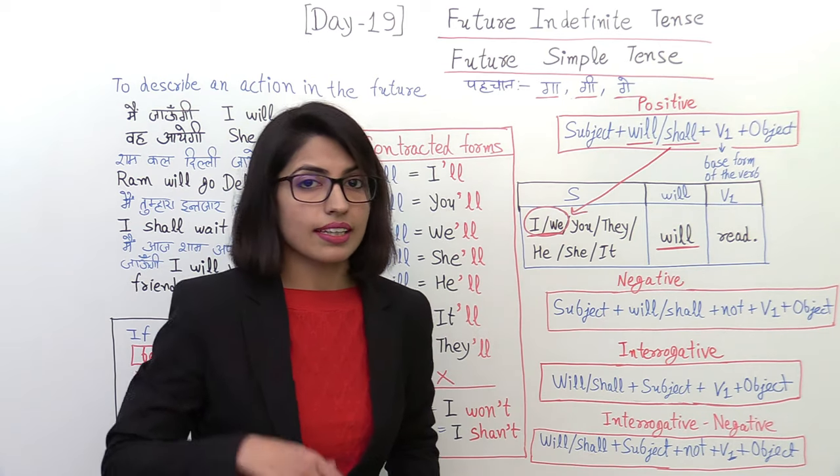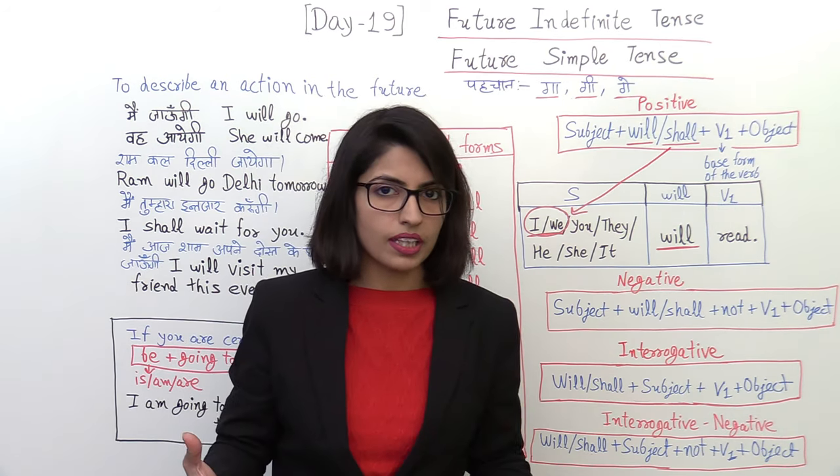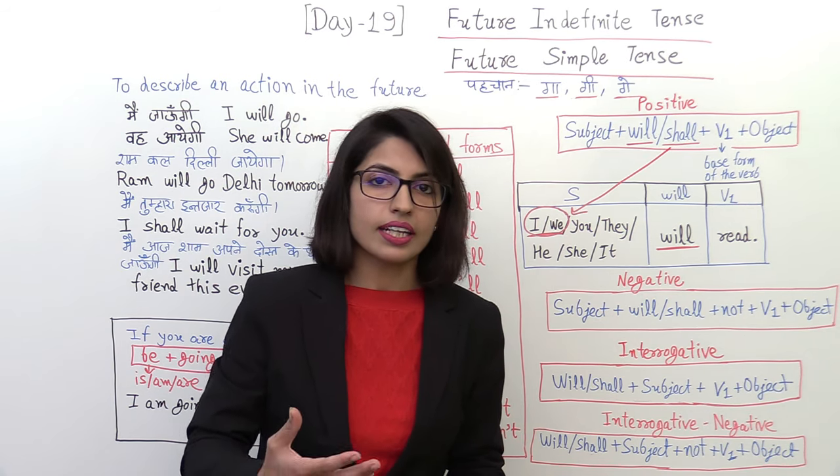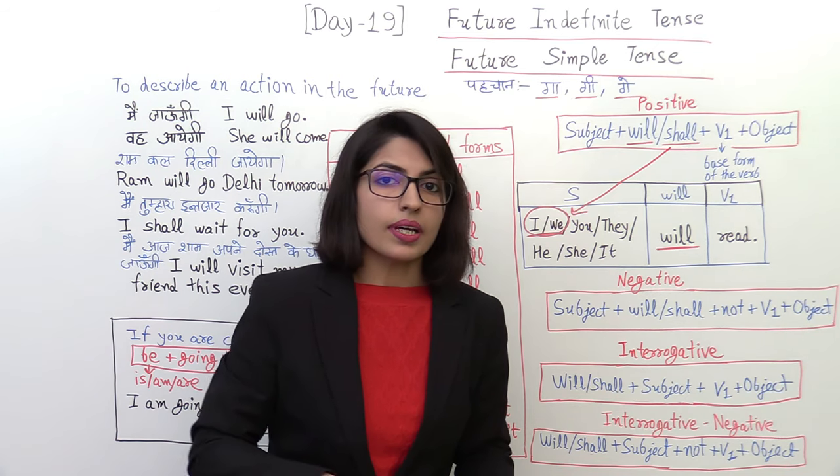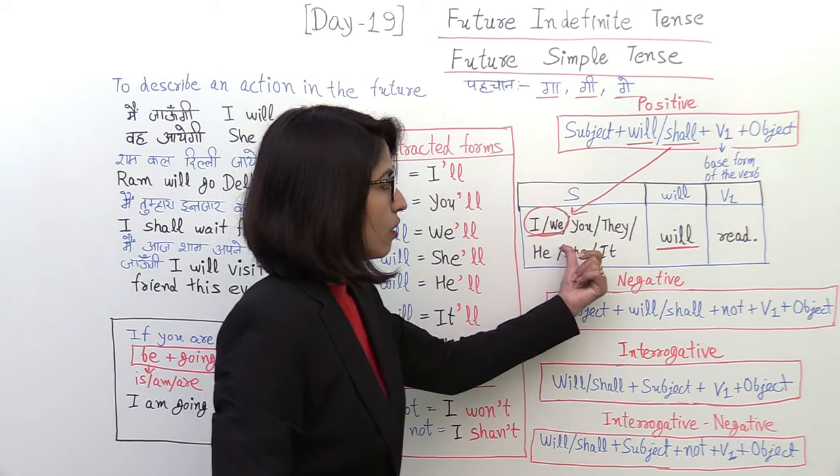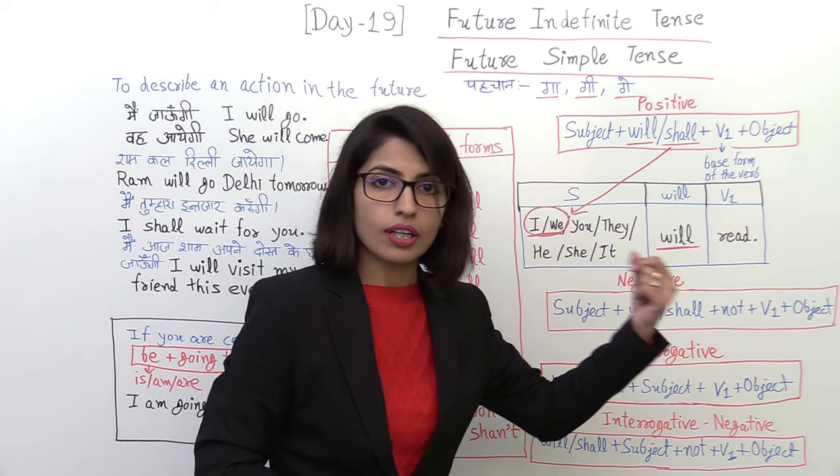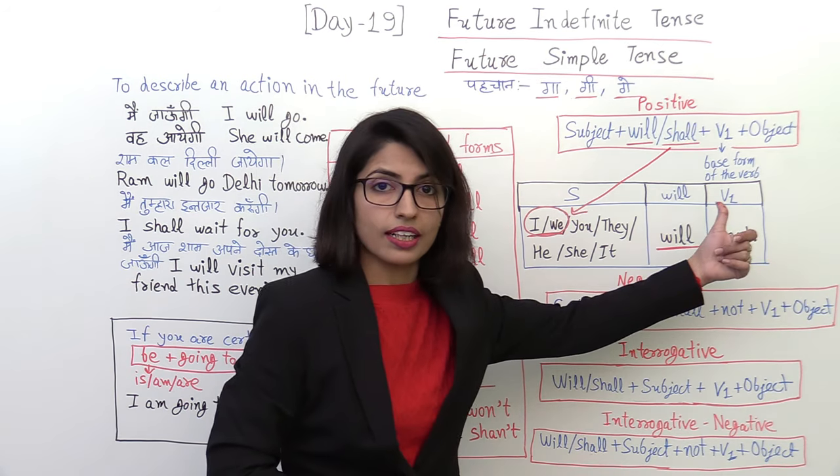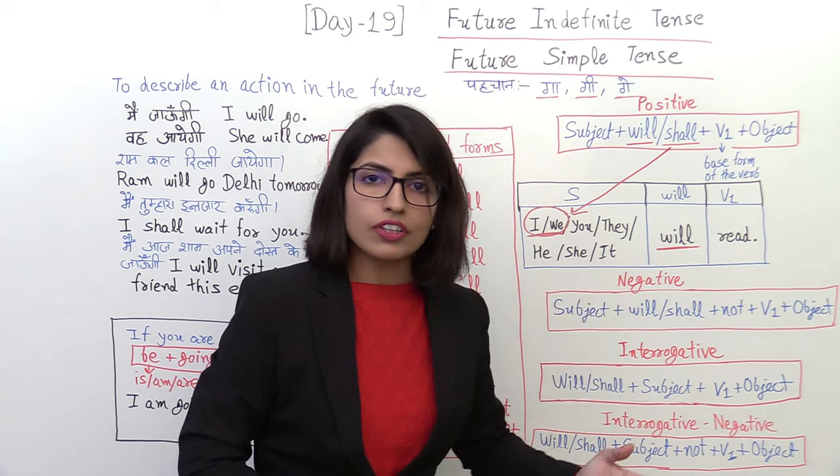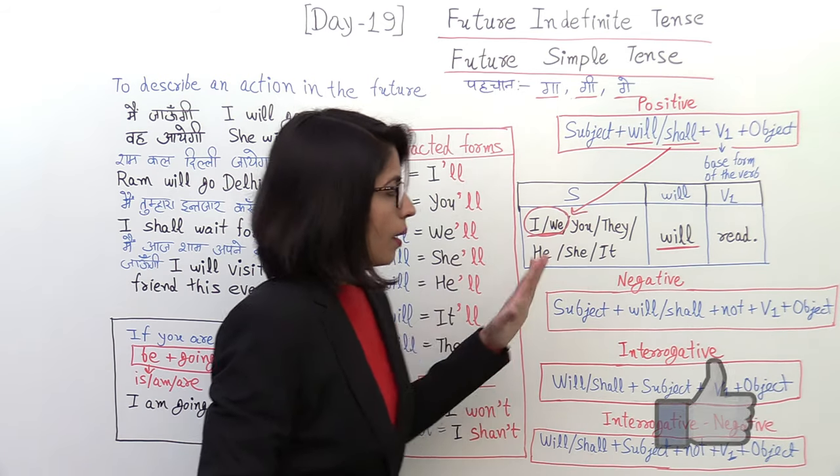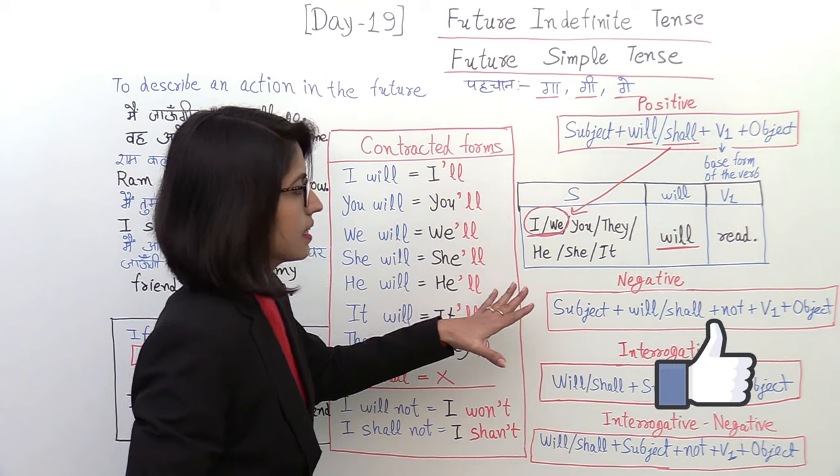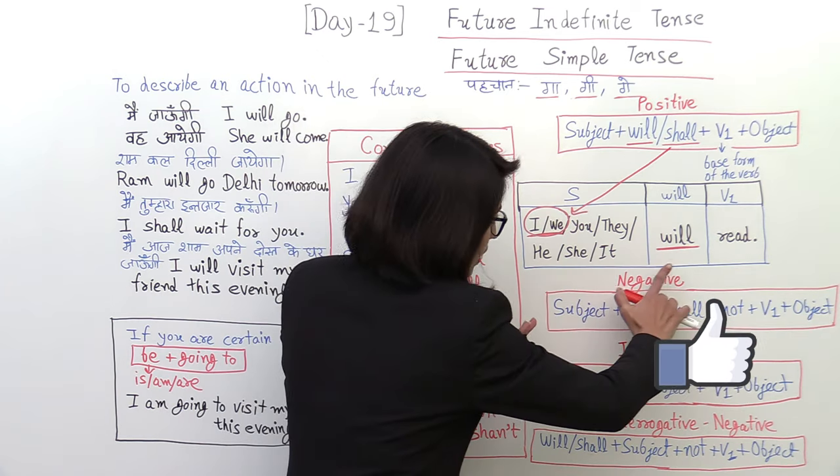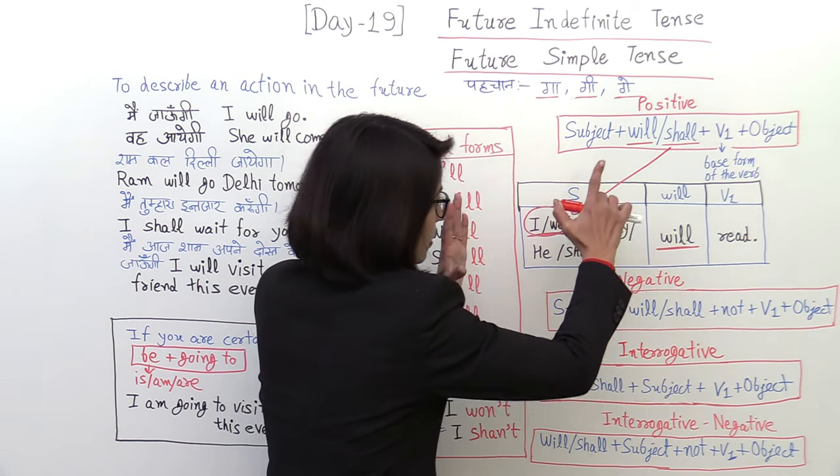If you have confusion, then use will with all of them. But one more important thing is that if you are telling strong emotions, a strong sentence in which there is emotion or command, there is order, the rule changes. If you are telling strong emotions, you will use will with I and we, and you will use shall with you, they, he, she, it.